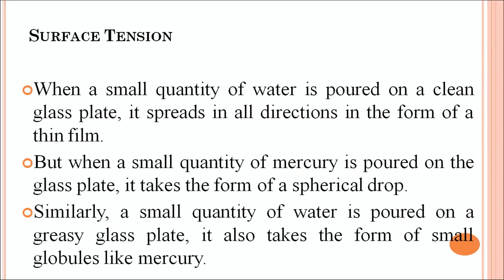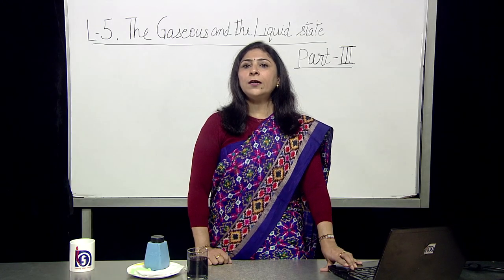Now I am going to tell you about surface tension. When a small quantity of water is poured on a clean glass plate, it spreads in all directions in the form of a thin film. But when a small quantity of mercury is poured on a glass plate, it takes the form of a spherical drop. You may notice this when a thermometer breaks — mercury comes out and it is always in a spherical drop form and very difficult to pick up.